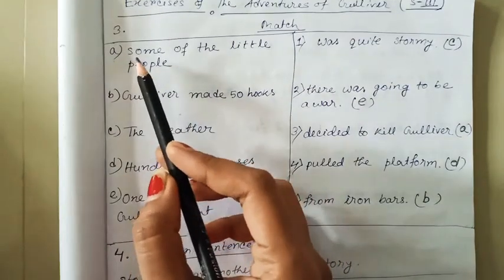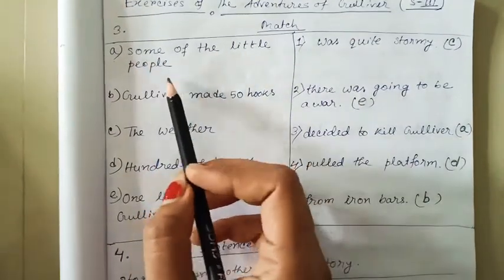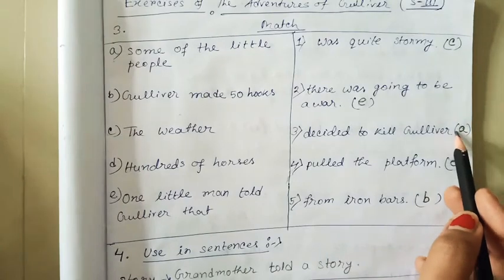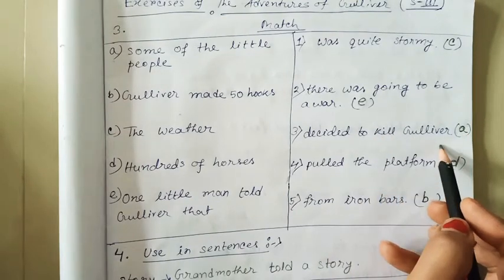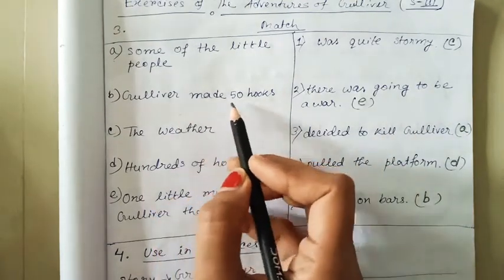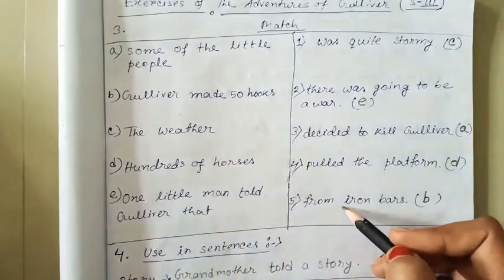Let us match. Some of the little people decided to kill Gulliver. Gulliver made 50 hooks from iron bars.